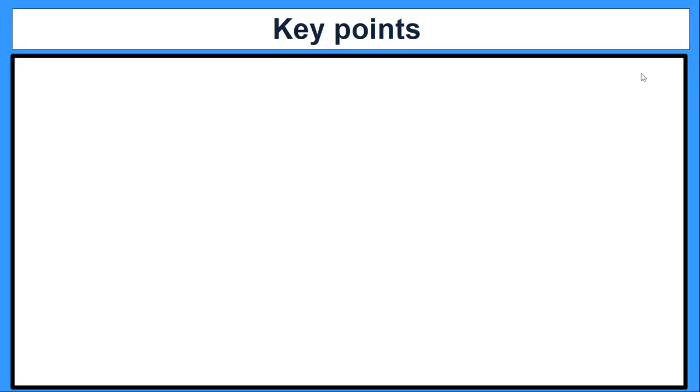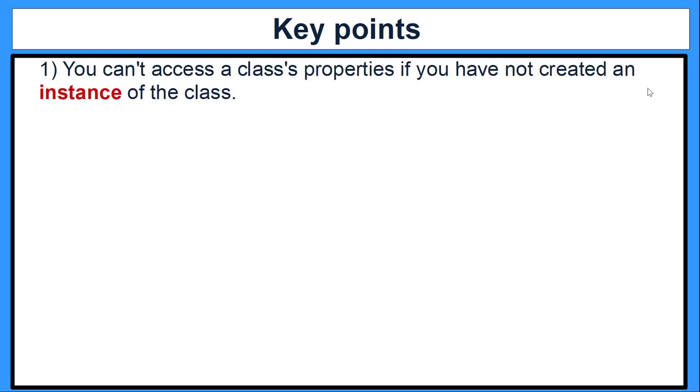The key points are about some common errors that you could create when using classes. We're going to go through them very quickly, but then I'll give examples and show examples later on. So the first one is, if you've not created your instance, you can't access the class property. So that's a common error. If you don't really know what an instance is, I suggest looking at the video Terminology of Classes and Objects.